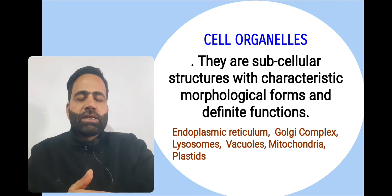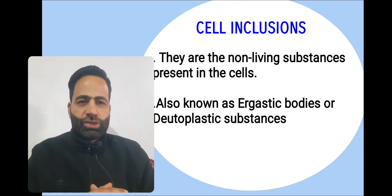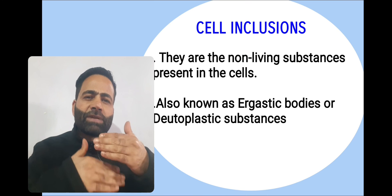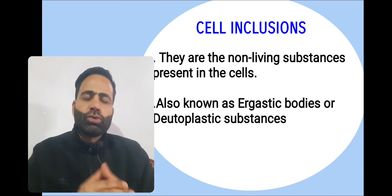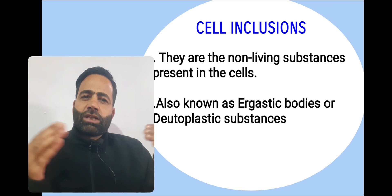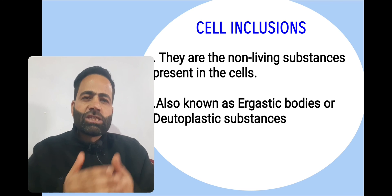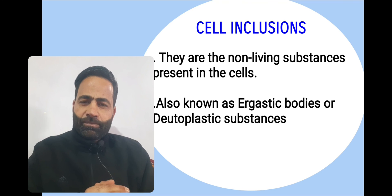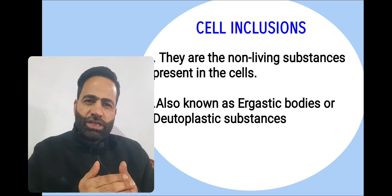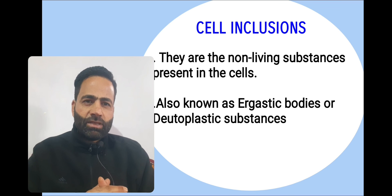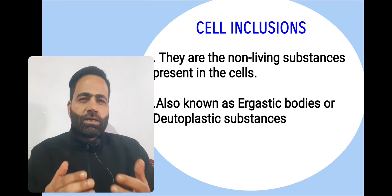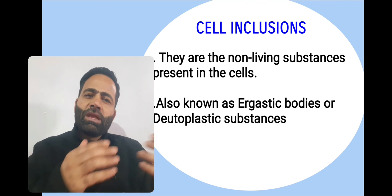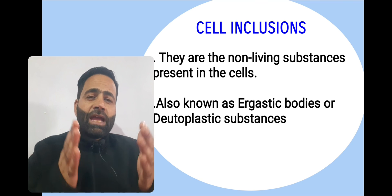Another component of the cytoplasm are the cell inclusions. The non-living substances present in the cytoplasm constitute the cell inclusions. They are also called ergastic bodies or deutoplastic substances. They may be present in the form of organic materials such as glycogen granules or starch granules, or may be present in the form of inorganic crystals.